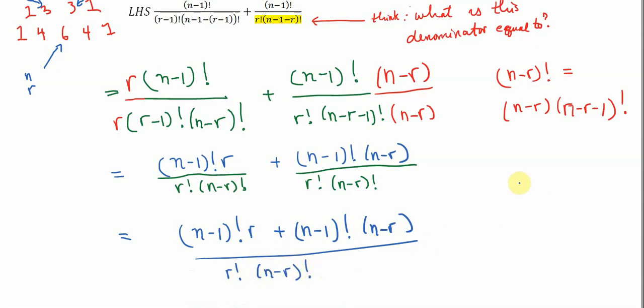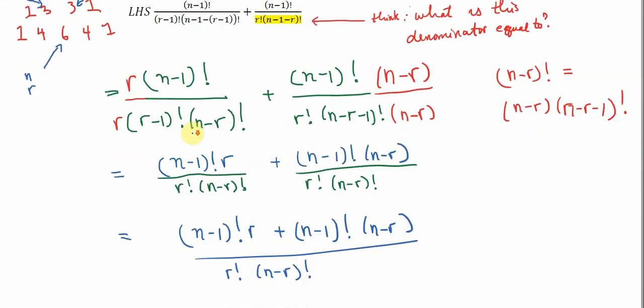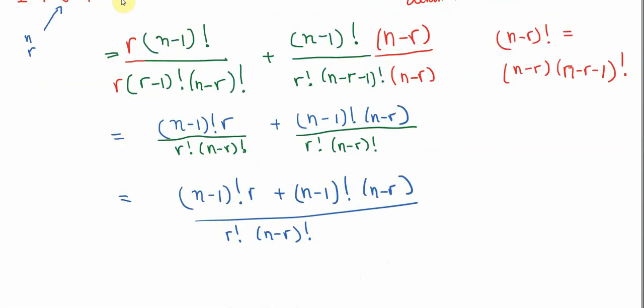And we're almost there. You see that if, let's not forget the right hand side that we're aiming for, in the denominator, we need to get r factorial times n minus r factorial. That's exactly what we have already. And what we need to do now is clean up or maybe simplify, as I would say, the numerator.